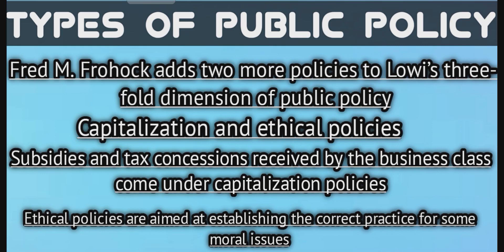Ethical policies are aimed at establishing the correct practice for some moral issue. For example, the US Supreme Court's decision in 1973 made abortion a legally acceptable alternative in the first three months of term. The court did not settle the moral issue of abortion — many people still view abortion as morally wrong even though it is legally permitted. But the public policies following the court's decision set out what ought and ought not to be done in an area marked by deep moral convictions, establishing legally permissible practices on a moral matter.